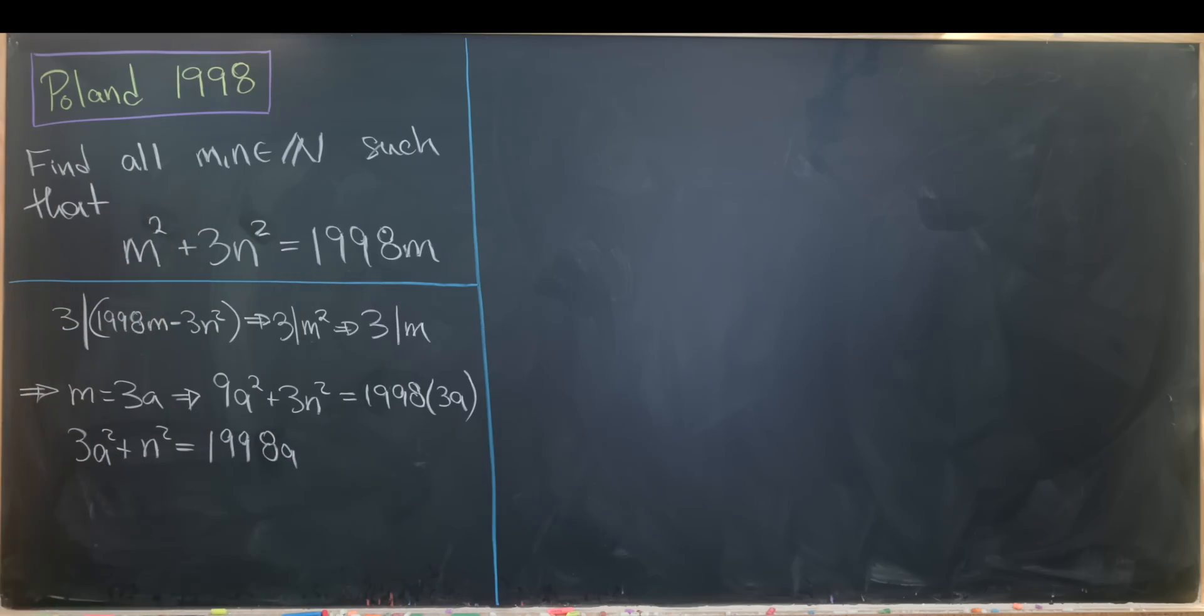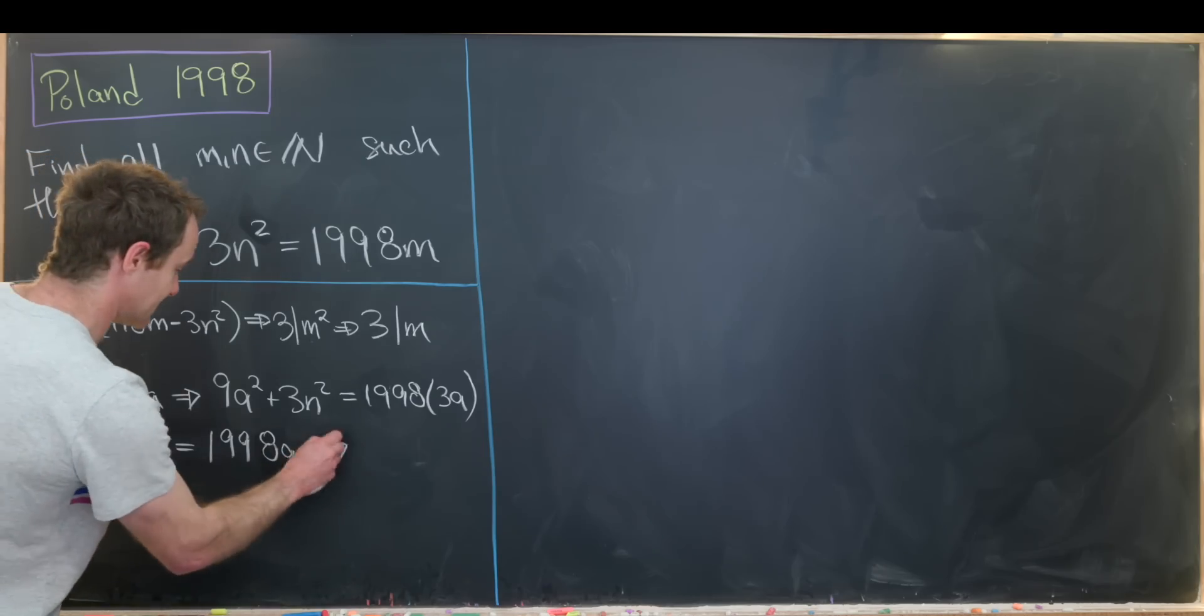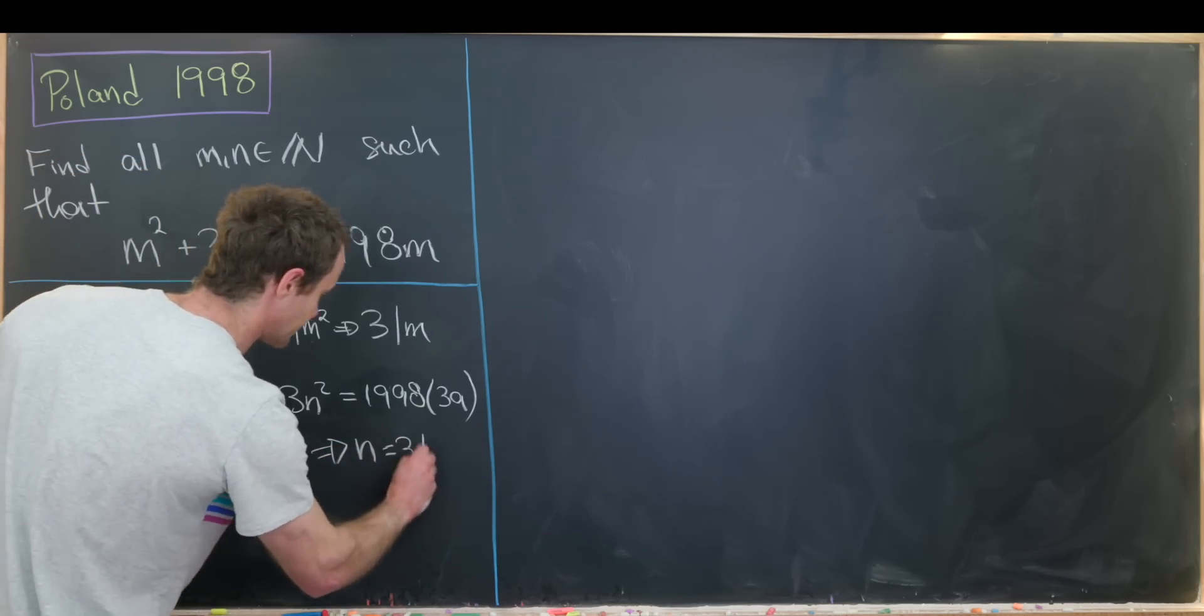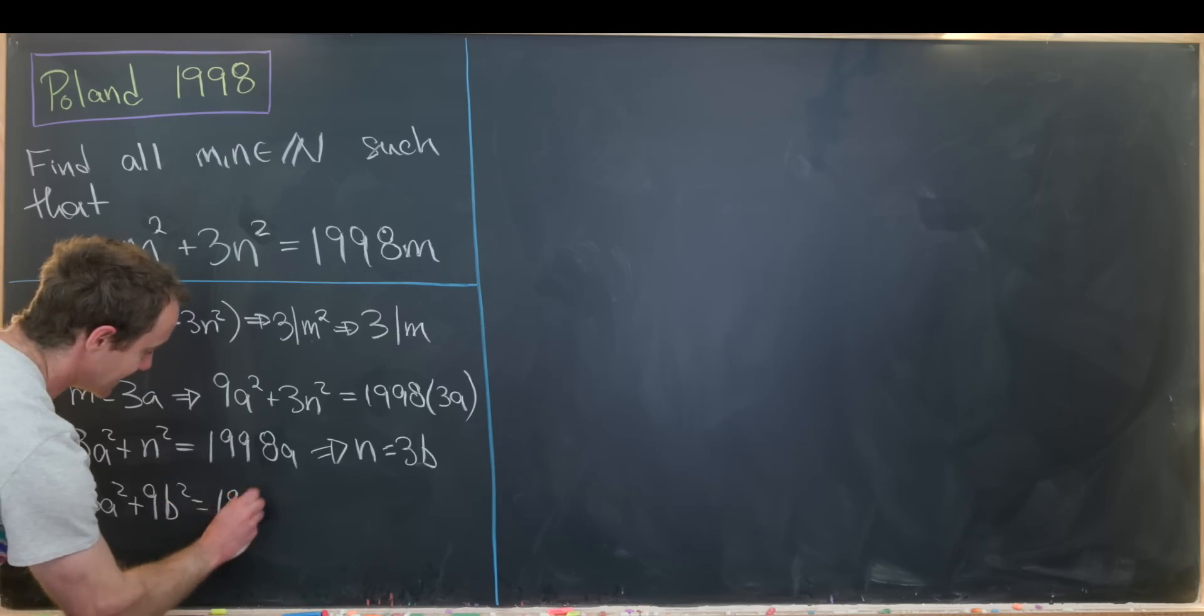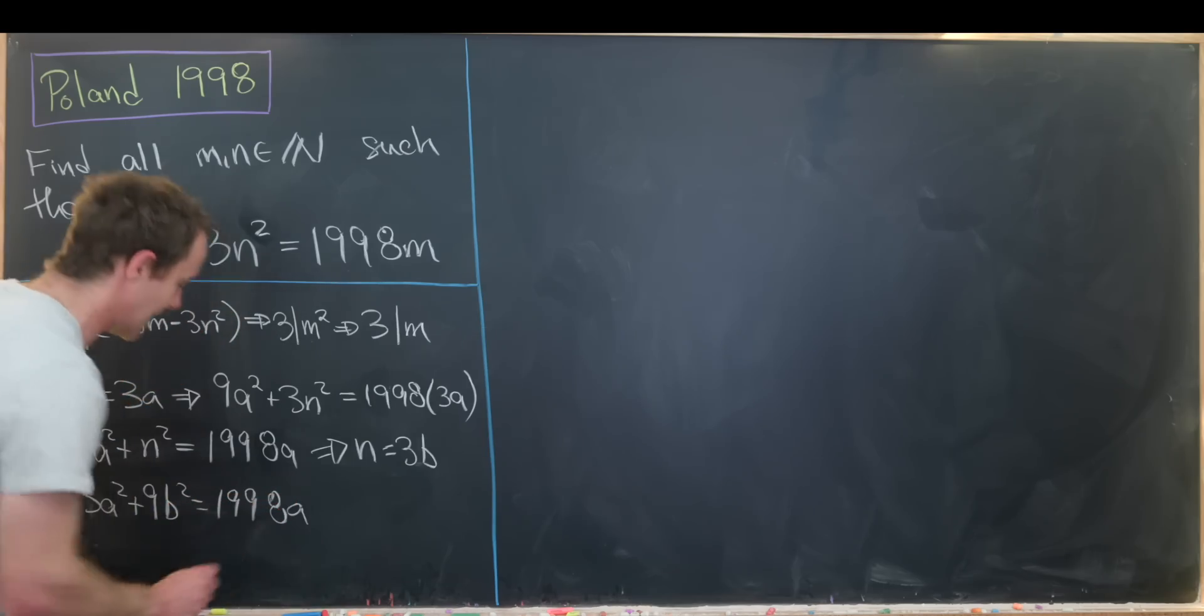Notice that'll give us 3a squared plus n squared equals 1998a. Now we'll play the same game again that we did up here, but we'll play it with n instead of m. And that'll tell us that n is equal to 3 times b. Looping that back in gives us 3a squared plus 9b squared equals 1998 times a.